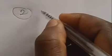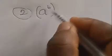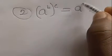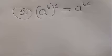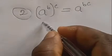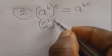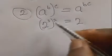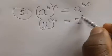Law number 2: a raised to power b, everything raised to power c, is equal to a raised to power bc — you multiply the powers. For example, 2 raised to power 3, raised to power 2, gives 2 raised to power 6.